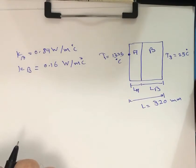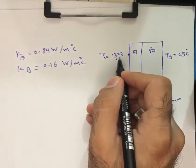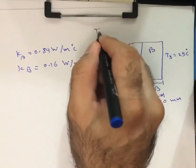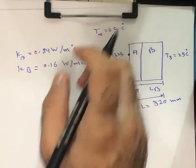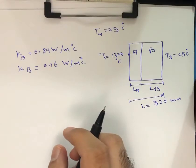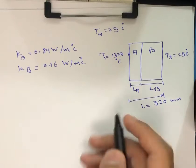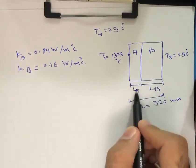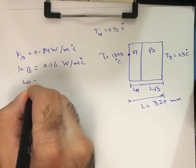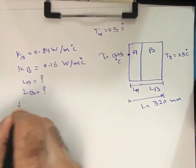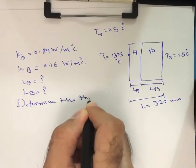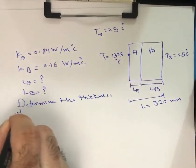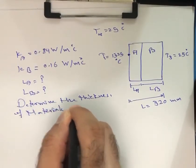The temperature T1 is 1325 degrees Celsius and the ambient temperature T3 is 25 degrees Celsius. It is required to determine the thickness of material A and material B. The total thickness is known but the individual thicknesses L_A and L_B are unknown, so our goal is to determine the thickness of materials A and B.